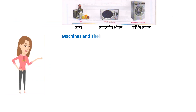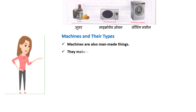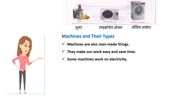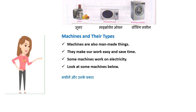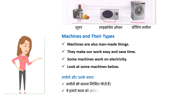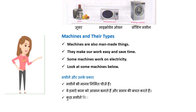Machines and their types. Machines are also man-made things. They make our work easy and save time. Some machines work on electricity. Look at some machines below. Machines aur unke prakar. Machines bhi maanav nirmit cheezay hain. Weh hamare kaam ko aasaan banaate hain aur samay ki bachat karte hain. Kuchh machines bijli par kaam karti hain. Neeche kuchh machinon ko dekhein.